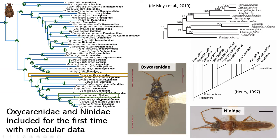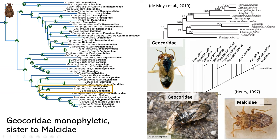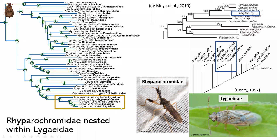Also looking at Geocoridae, we found it is monophyletic and sister to Malcidae. And we found that Rhopalochromidae is nested within Lygaeoidea, rendering Lygaeoidea paraphyletic.